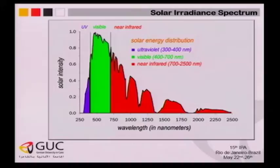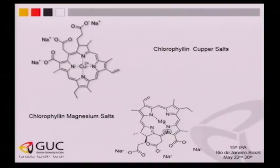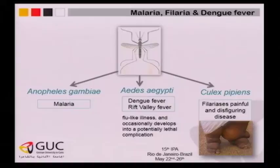Our natural photosensitizers include plant extracts — chlorophyll A and chlorophyll B. Even though the structure is very similar, the absorption spectrum is totally different in terms of where you have to excite it. Most importantly, chlorophyllin — the copper salts or magnesium salts — these compounds are water soluble.